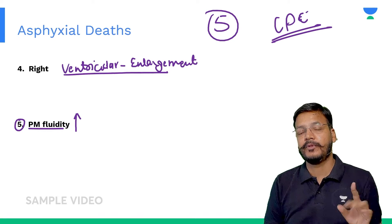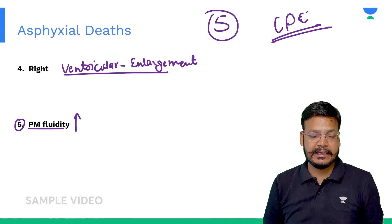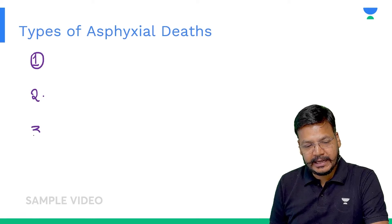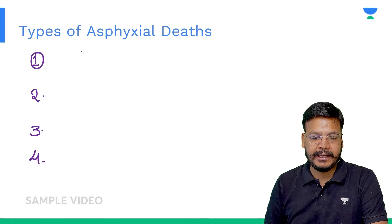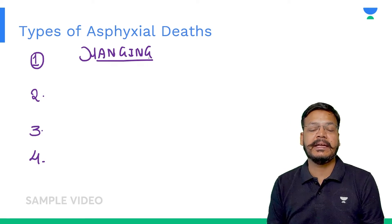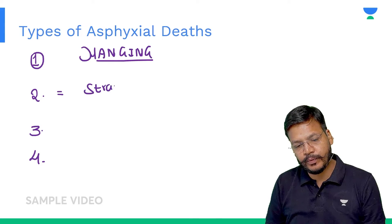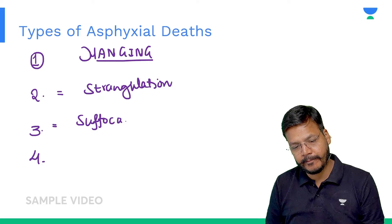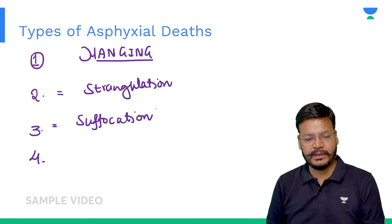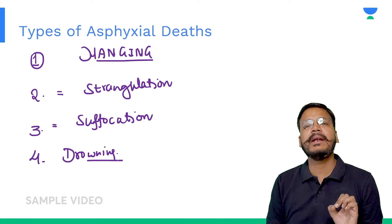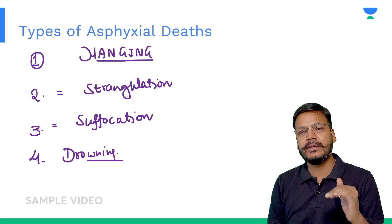The meaning of asphyxia is pulselessness. Now, the types of asphyxial death can be classified into four categories: number one is hanging, number two is strangulation, number three is suffocation, and number four is drowning. These are the four main types of asphyxial death.